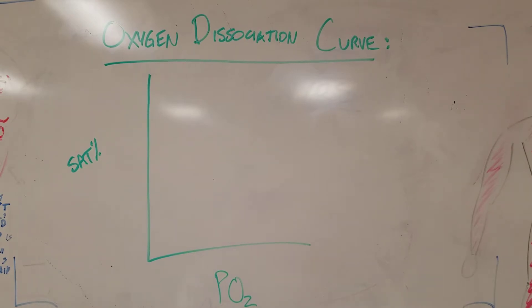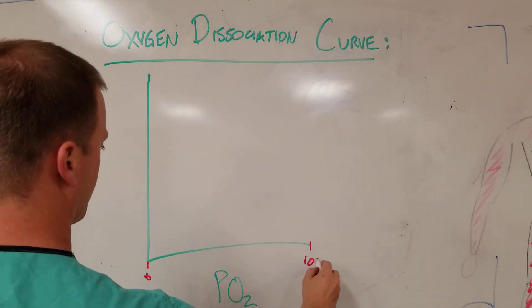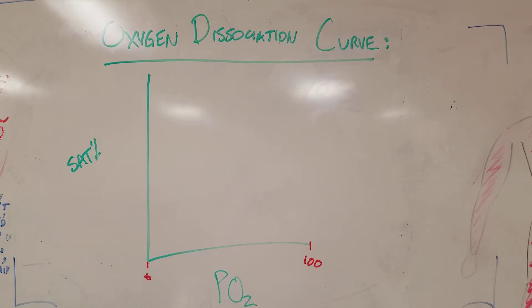Now what this curve does is it graphs on the y-axis the saturation of hemoglobin particles at certain partial pressures of oxygen. And so usually we set this to 0 to 100, even though the partial pressure of oxygen can be higher than 100.